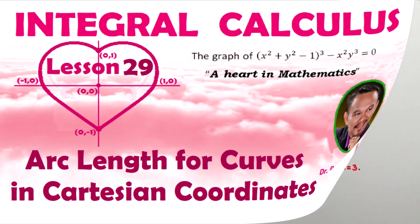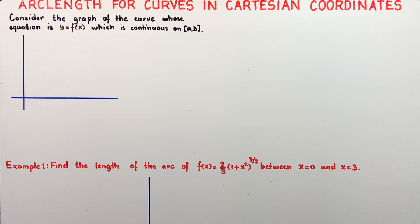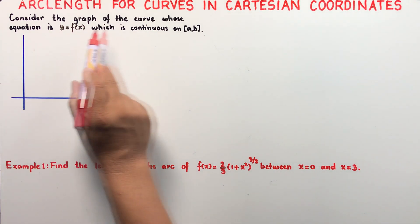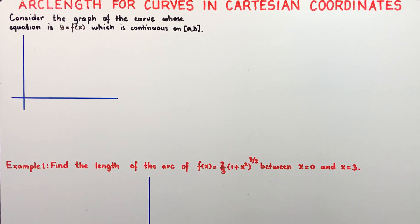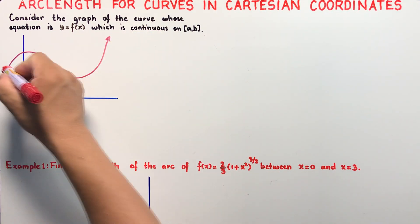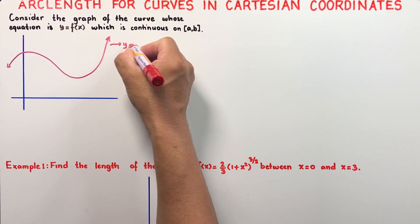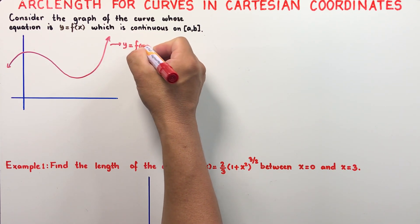In this video, I will be discussing the arc length for curves in Cartesian coordinates. Consider the graph of the curve whose equation is y equals f of x, which is continuous on the closed interval from a to b, and suppose the graph of that curve is defined by the equation y equals f of x.